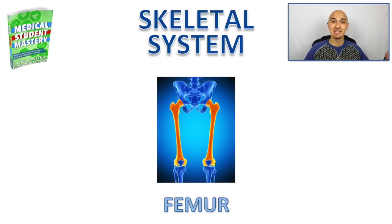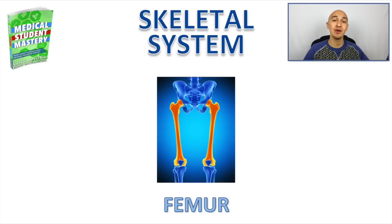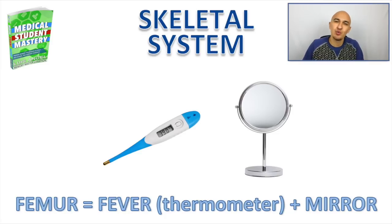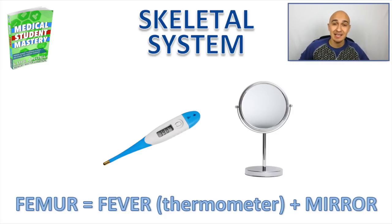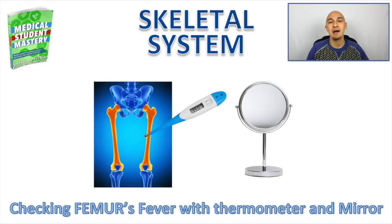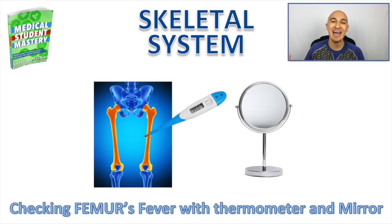Let's go through more examples, continuing with the skeletal system — now targeting the femur. For femur, I picture fever and a mirror. I use a thermometer to represent fever, then associate that to the actual location. My story is: I'm checking the femur's fever with a thermometer and a mirror.